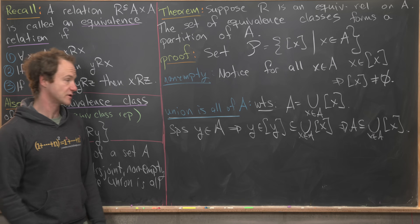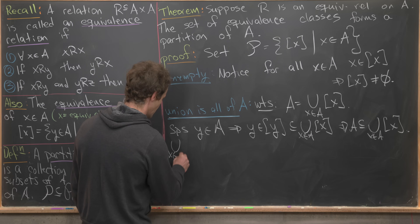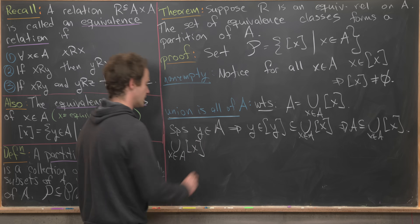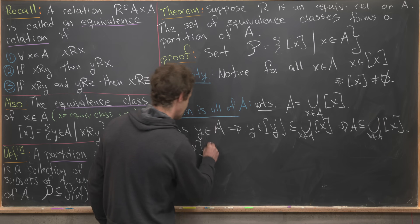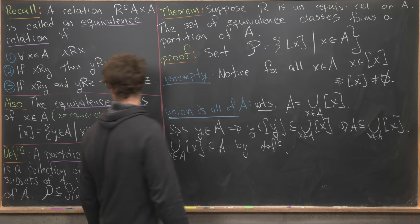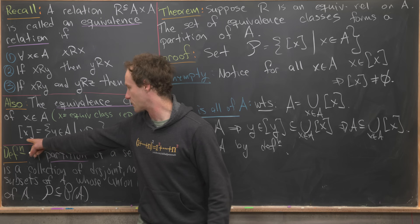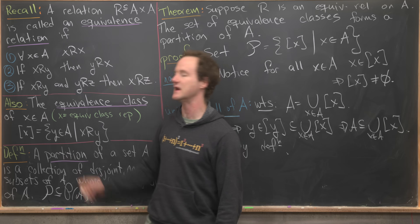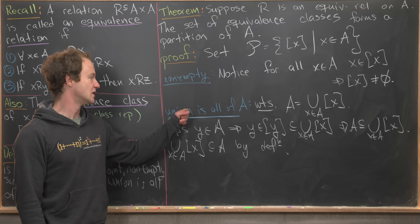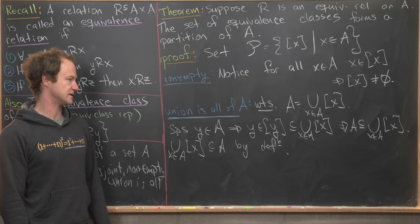For the reverse containment, the union over all X in A of the equivalence class of X is a subset of A by definition — the equivalence class of X is only made up of elements from A in the first place, so there's nothing more to do in that direction. This means we've shown A is the union of all of these equivalence classes.